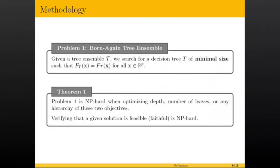So, formally stating our problem, we are receiving a tree ensemble T and we want to create a decision tree of minimal size such that the decision function is the same. We prove in the paper that this program is NP-hard when optimizing depth, number of leaves, or any objective that is a hierarchy of these two objectives. More interestingly, even verifying that a solution is feasible, that is that the born again tree is faithful to a tree ensemble, this is already an NP-complete verification problem. So, even checking feasibility is a difficult problem.